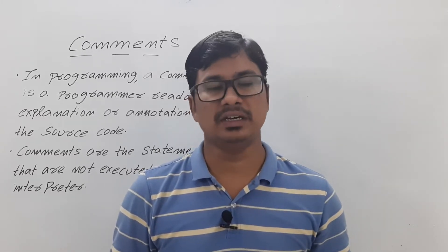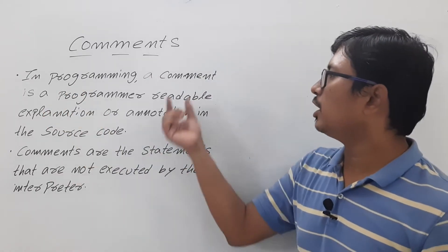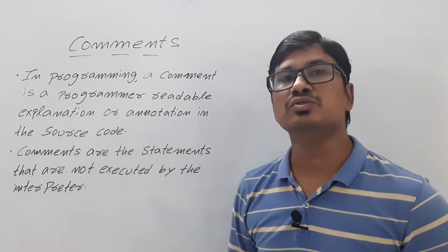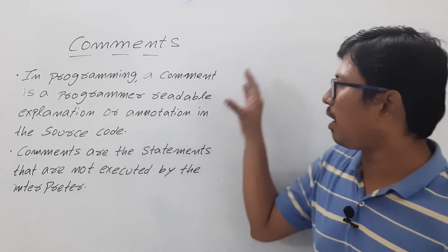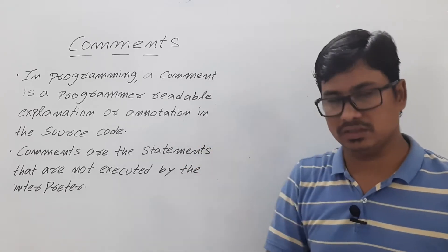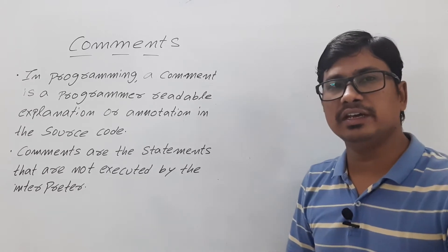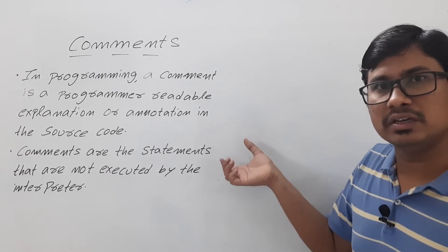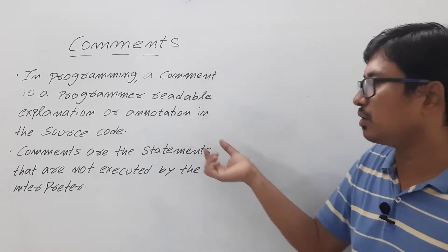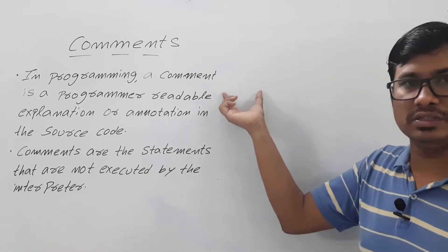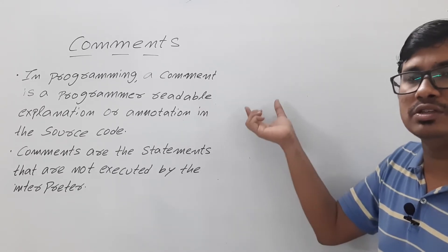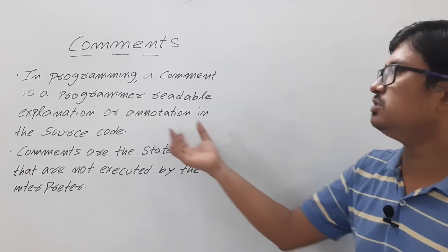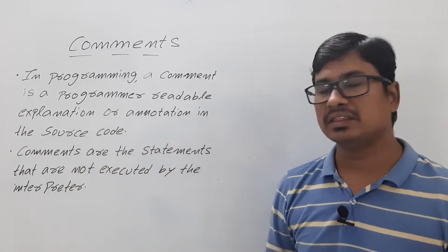First, in programming, a comment is a programmer-readable explanation or annotation in the source code. Suppose you have written a program with some logic, and later your manager or team leader wants to know the purpose of that logic. If you write comments, they will understand why you used these variables or these loops. Writing such explanations with comments is very helpful.